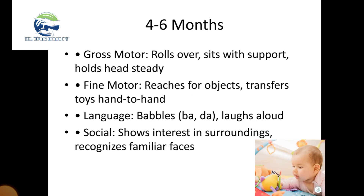Four to six months: gross motor skills include rolls over, sits with support, and holds head steady. Fine motor skills include reaches for objects and transfers objects hand to hand. Language includes babbling and vocalizing loudly. Social skills include showing interest in surroundings and recognizing familiar faces.